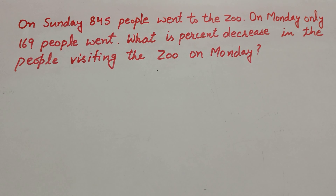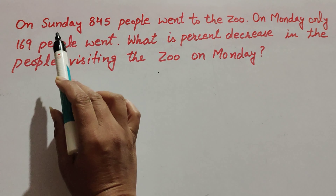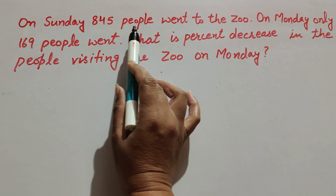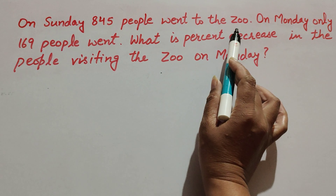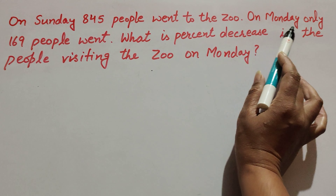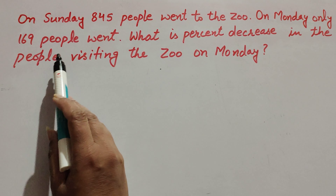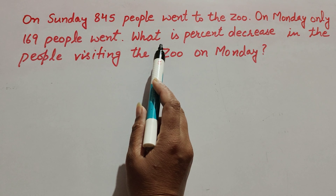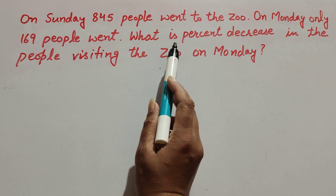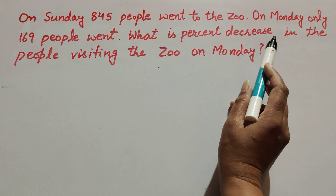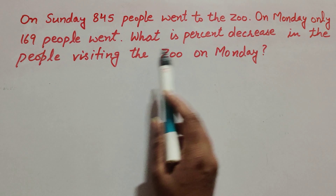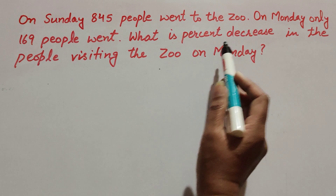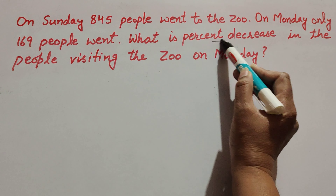Hello friends, welcome to my channel. In this video we discuss: on Sunday, 845 people went to the venue; on Monday, only 169 people went. What is the percent decrease in people visiting on Monday? We need to find the decrease percentage.